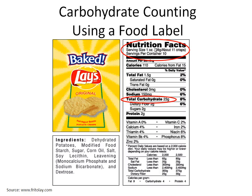The serving size listed on this label is one ounce. You may be asking yourself, what does one ounce look like? You can find that the weight of one ounce, or 28 grams, is about 11 crisps.